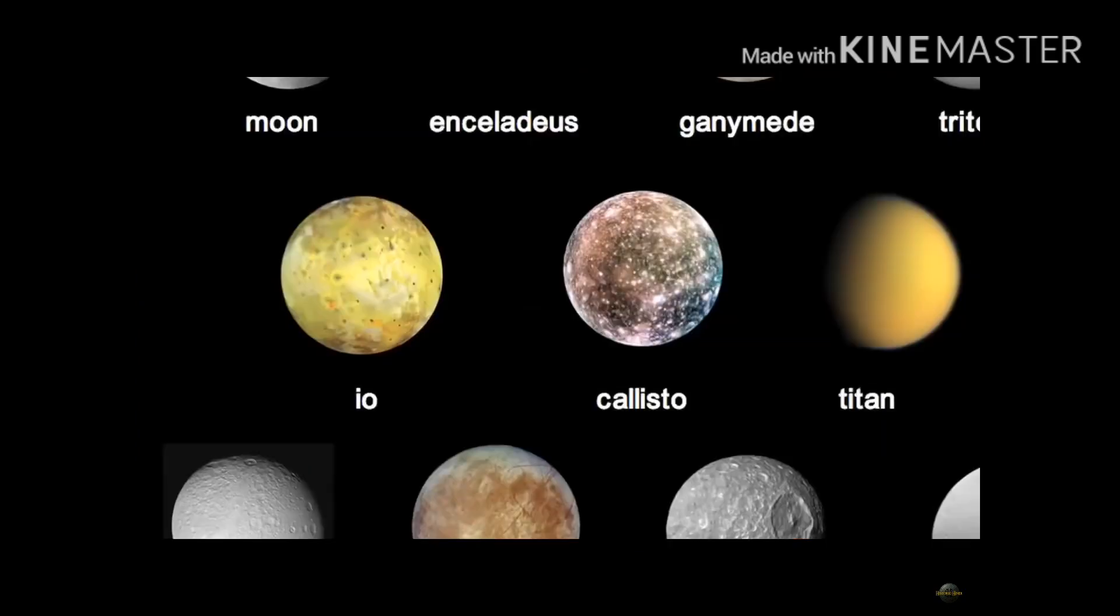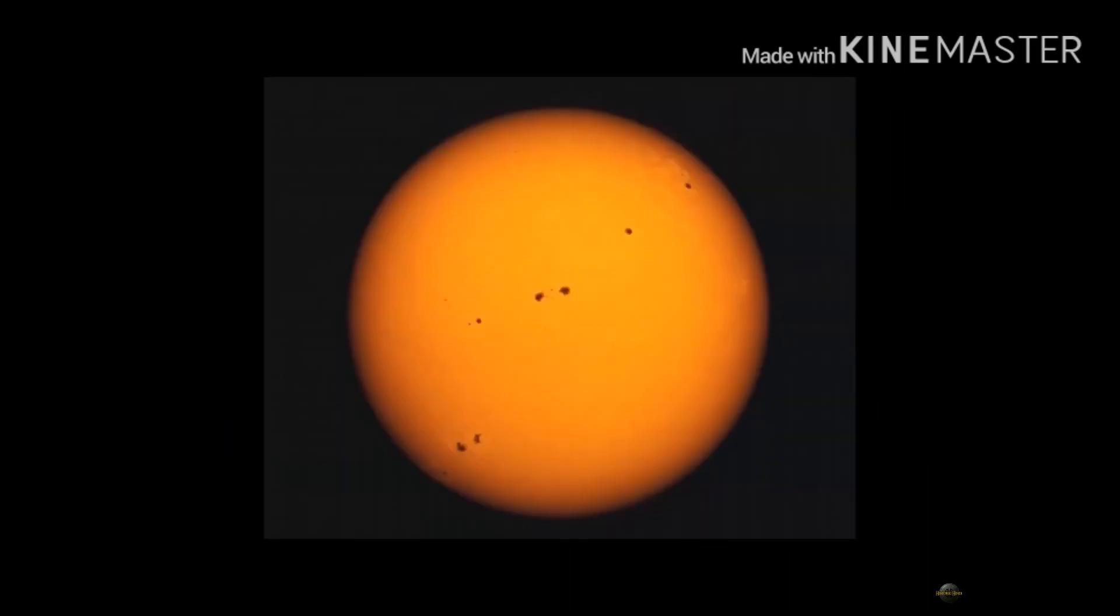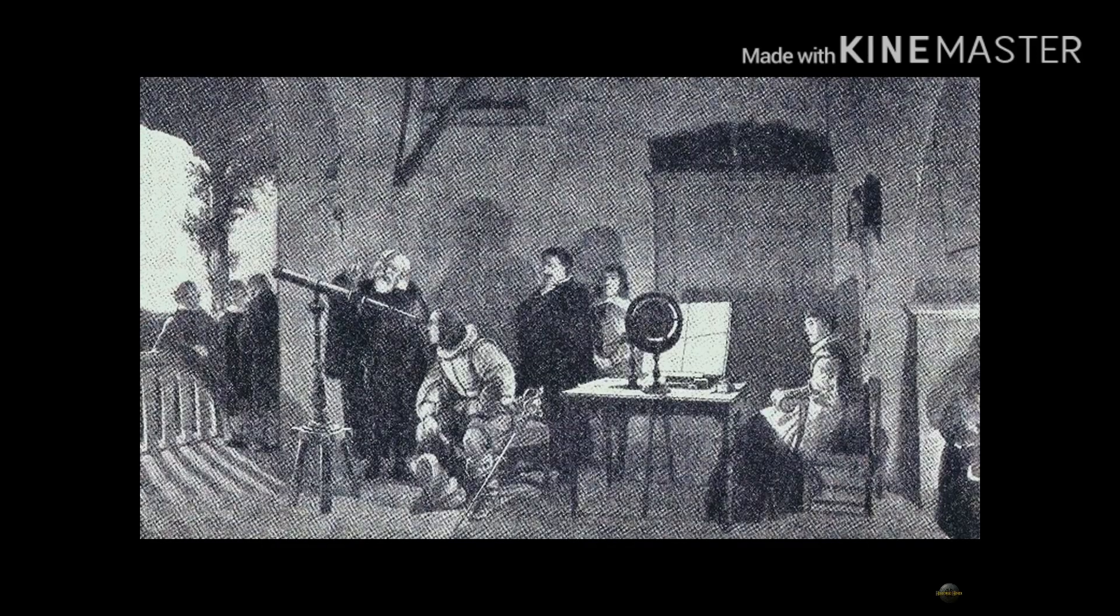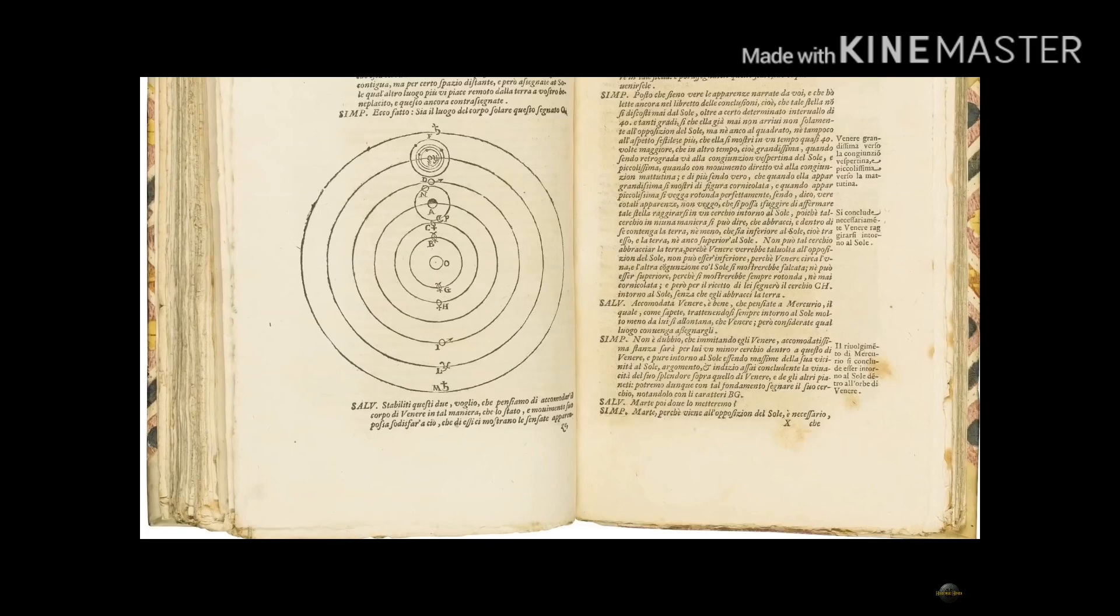He started observing Jupiter and identified four moons of Jupiter. He even observed the dark spots which are present on the sun. He also observed the moon and found its surface to be very rough. Then he published his findings in his book.